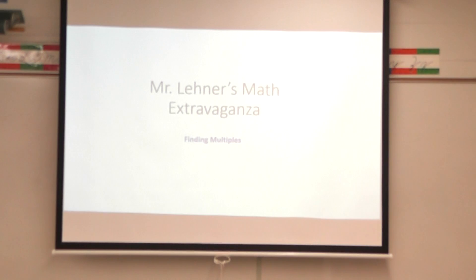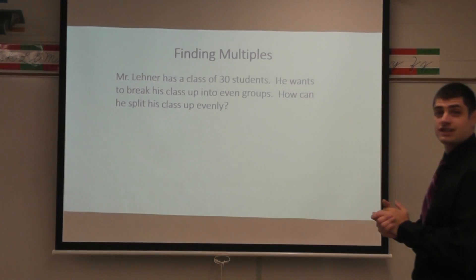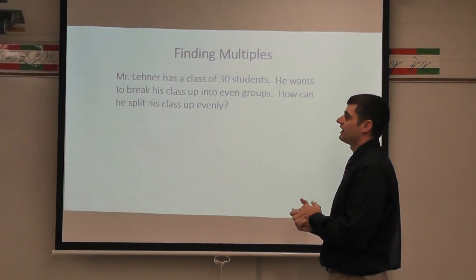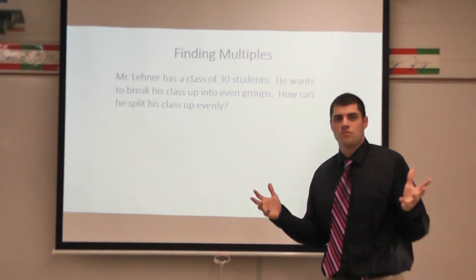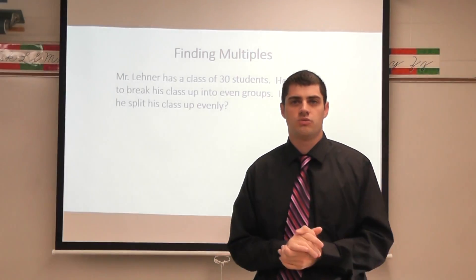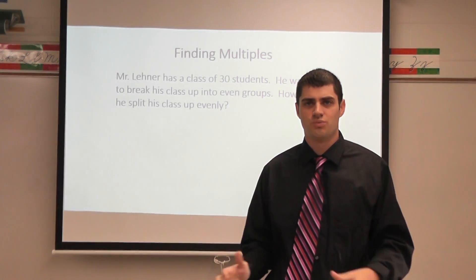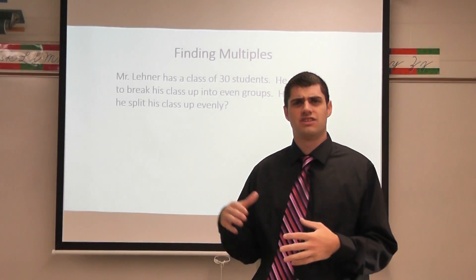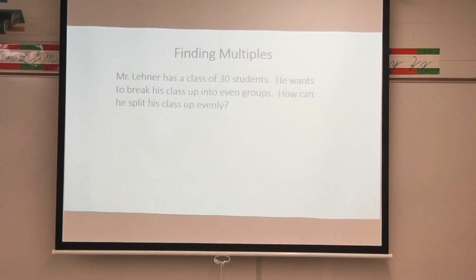Let's take a look at an example. In this first example it says Mr. Lehner has a class of 30 students. He wants to break his class up into even groups. How can he split his class up evenly? So imagine we're going to do some work stations and there's 30 of you in the classroom. How can I make even groups so there's the same number of students in each group? I need to look at factors, divisors, and multiples.